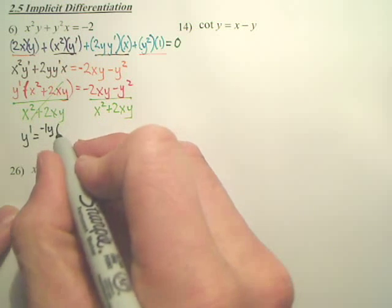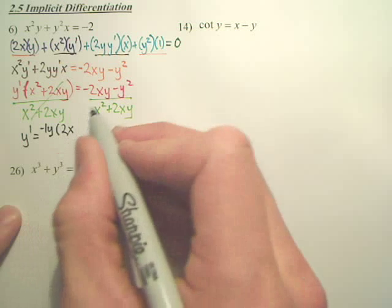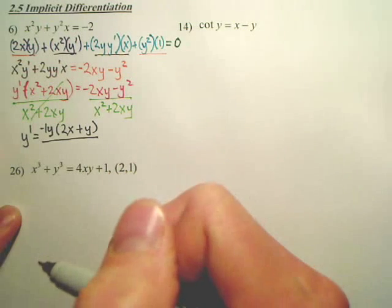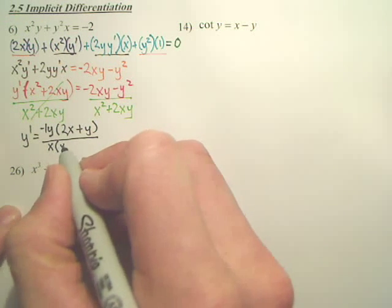What's that leaving me with? It's like 2x and then plus y. And on bottom, we have an x, leaving me x.